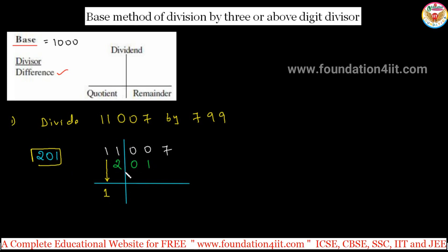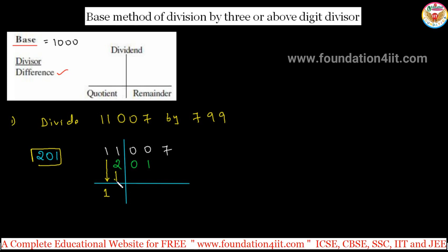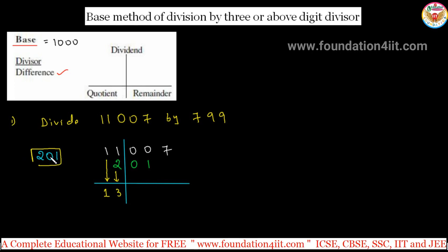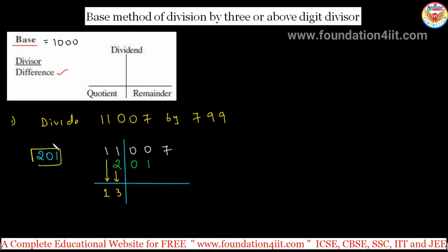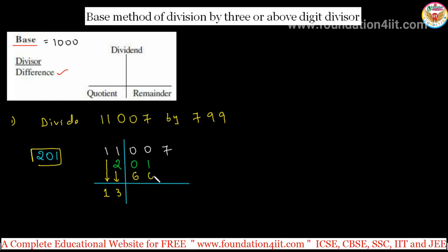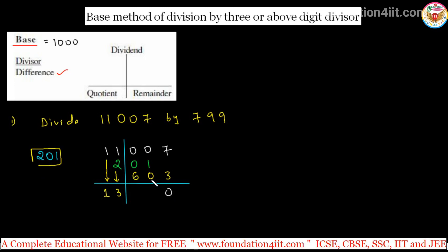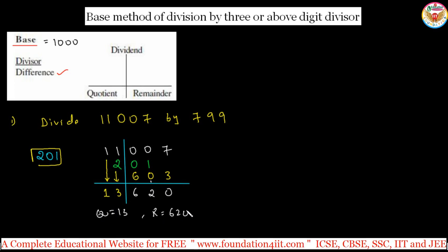Next step: 1 plus 2 is 3. Take this 3 and multiply again by 201. 3 into 201 is 603 — single digit multiplication: 3×1=3, 3×0=0, 3×2=6. So 603 goes here. Now do the addition: 7 plus 3 is 10, write 0 carry 1; that gives 2 and 6. So the quotient is 13 and the remainder is 620.